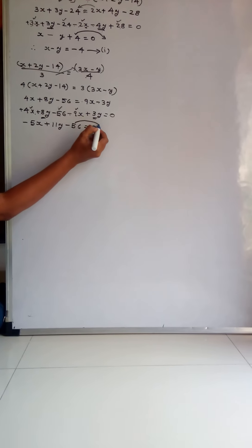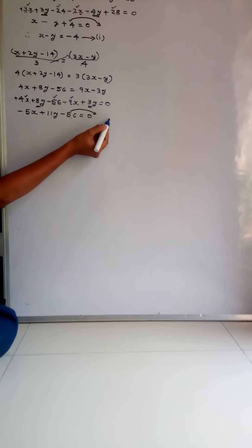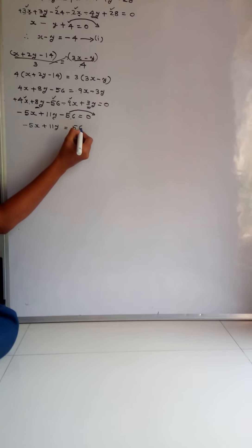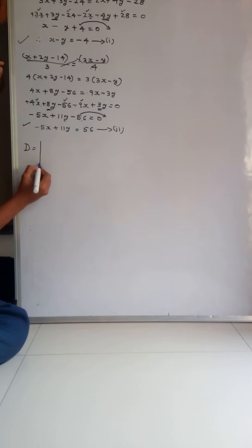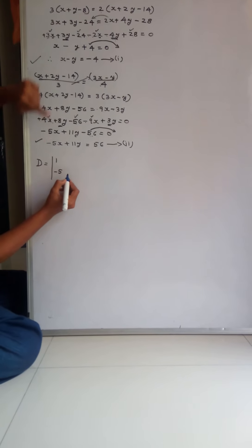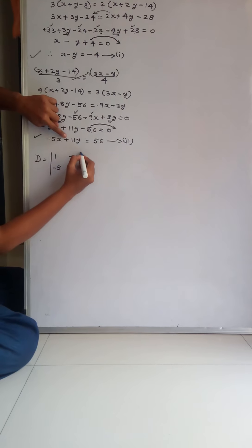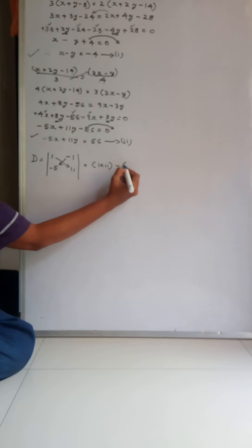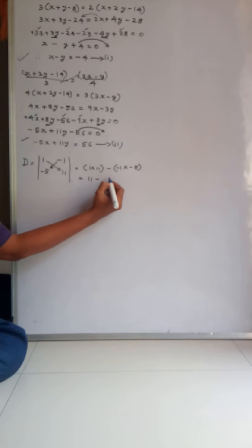Taking the constant 56 to the right-hand side: -5X + 11Y = 56. Consider this as Equation 2. Now write the determinant D. The coefficient of X in Equation 1 is 1, in Equation 2 is -5. The coefficient of Y in Equation 1 is -1, in Equation 2 is 11. D = (1)(11) - (-1)(-5) = 11 - 5 = 6.